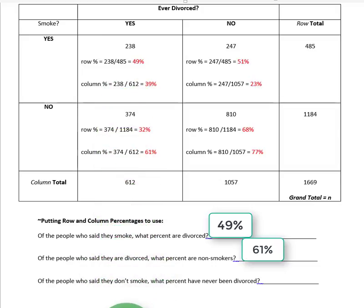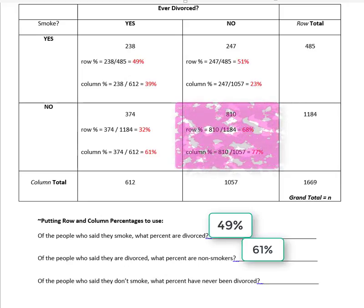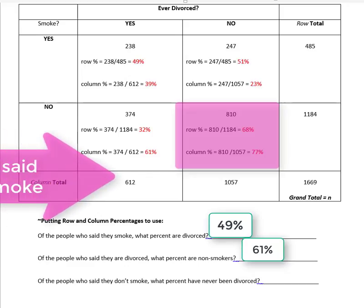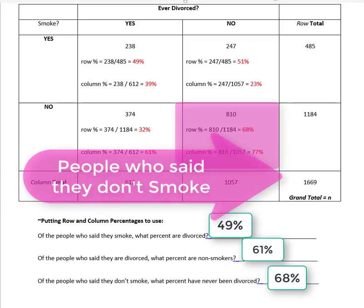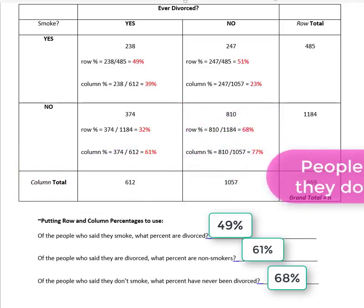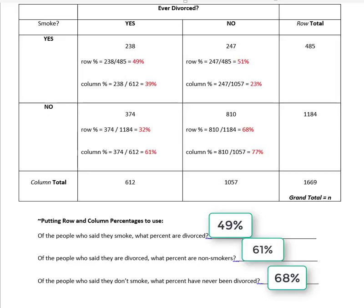Finally: of the people who said they don't smoke, what percent have never been divorced? That's the no/no cell. Since I'm focusing on just the people who said they don't smoke, that's a row of people, so I would use the row percent within that no/no cell, giving 68%. That is how you put row and column percents to use.